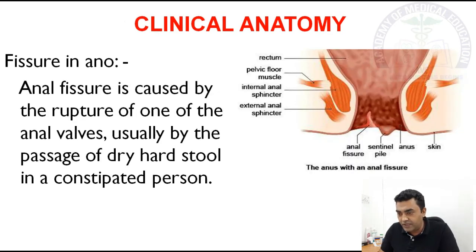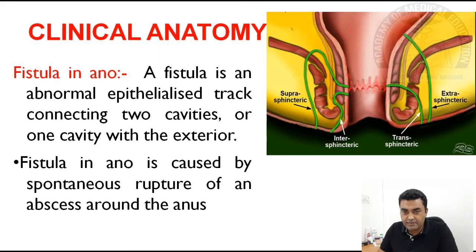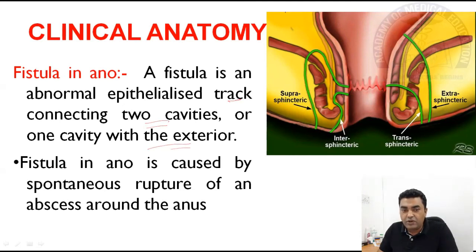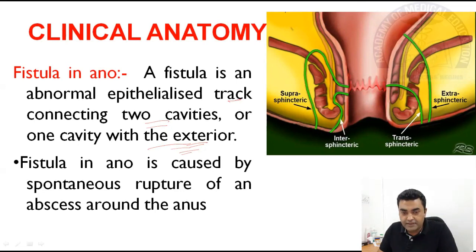Fissure in ano: an anal fissure is caused by rupture of one of the anal valves, usually by the passage of dry stool in constipated patients. Fistula in ano: a fistula is an abnormal epithelialized tract connecting two cavities or one cavity with the exterior. Fistula in ano is caused by spontaneous rupture of an abscess around the anus, communicating with the exterior skin.